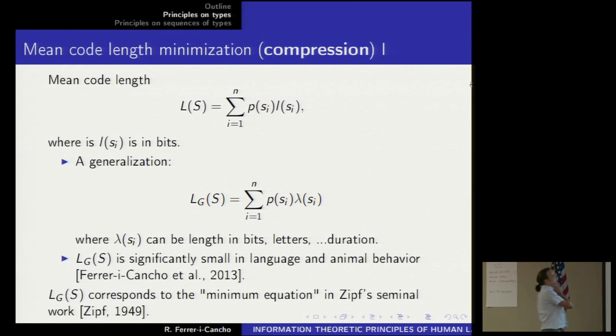Let's move to another important principle of behavior, which is compression. Information theory provides us with a powerful concept, which is the mean code length of a system. So you take, for instance, words, and you have their probabilities, and you have their length. The mean code length is measuring exactly the mean length of those words. This measure in standard information theory is usually defined in bits as units, but you could generalize it and then replace length in bits by length in letters or duration.